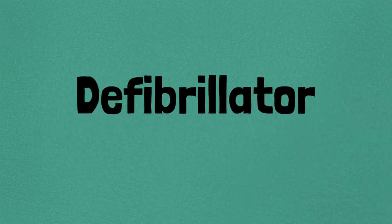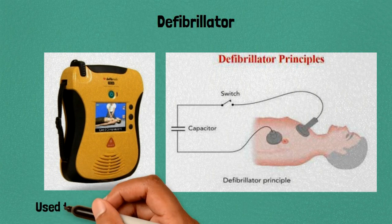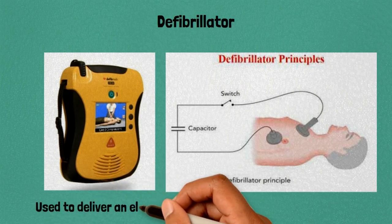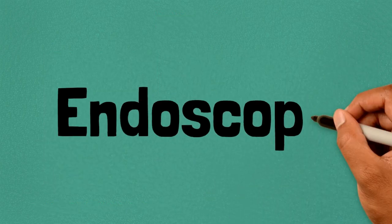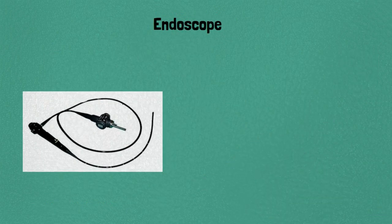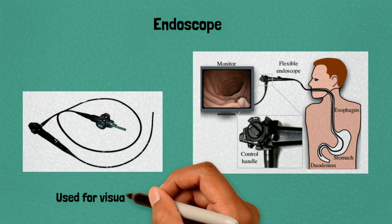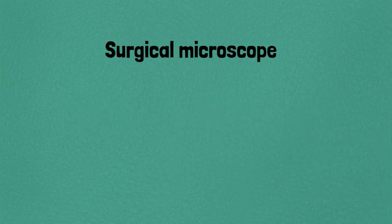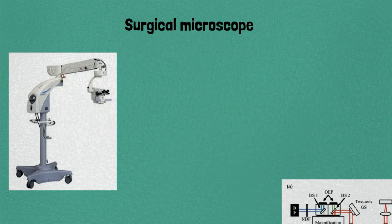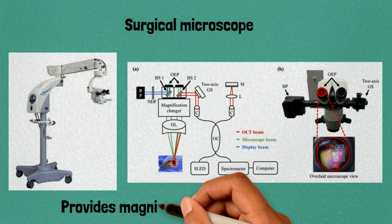Ten: defibrillator, used to deliver an electric shock to restore normal heart rhythm. Eleven: endoscope, used for visual examination of internal organs or structures. Twelve: surgical microscope, provides magnified views during surgery.